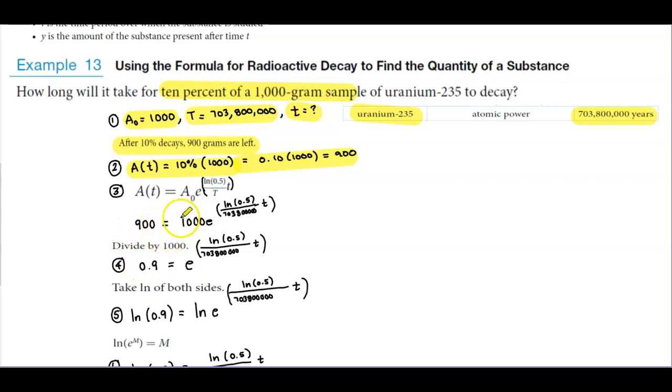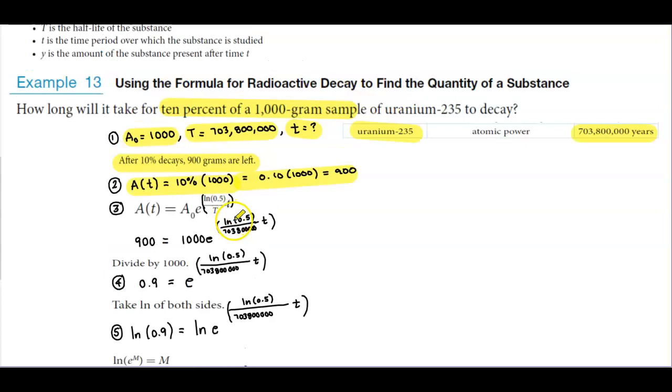Now we're going to plug in our information. So we have A(t), which is 900. We know the initial amount is 1000. We know that we have natural log of 0.5 from the formula divided by the half-life of that substance, which is 703,800,000 times t.